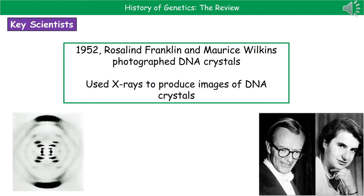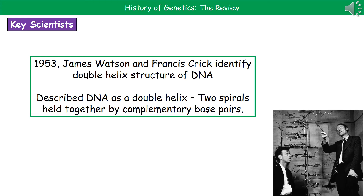Next we come to key people in the history of genetics that are sadly all too often forgotten. In 1952 we have Rosalind Franklin and Maurice Wilkins. What Rosalind Franklin actually did was take a photograph of DNA using a process called X-ray crystallography, producing that image you can see in the bottom left — the first time we'd really seen DNA. That image was then taken by Maurice Wilkins and passed on to James Watson and Francis Crick, who used it to identify the double helix structure of DNA. That's where we have those two spirals held together by complementary base pairs — that's what we mean by double helix.